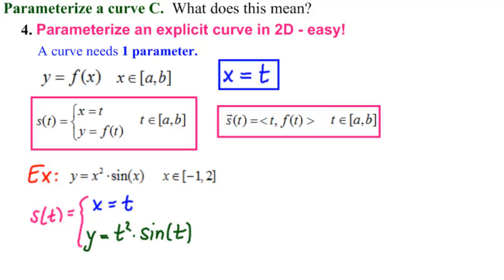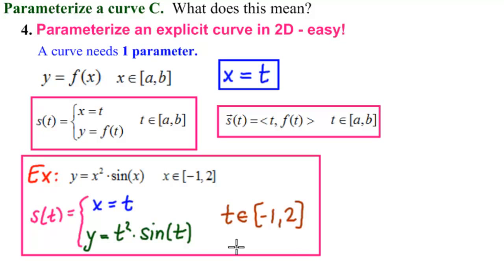and then everywhere we had X, we're going to write T. So T squared times sine of T. And then our interval, as we said, is the same as we got, so it's T in minus 1, 2. So here is our parametrization of this function.